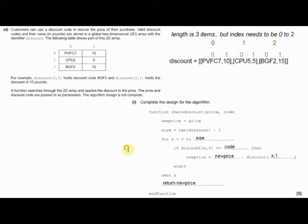This is quite complicated because it's also talking about a function, a sub-program as well. We've realised the customer is sending through the price of the product and they've also got a discount code - one of those three codes. All we're looking for is to look through our array to find the code, and when we find that code, find out how much discount it has. Discount[x][0]: x is going to change each time we go through the for loop, which is why we have 'next x'. Next x: x starts at 0, becomes 1, becomes 2, and so on.